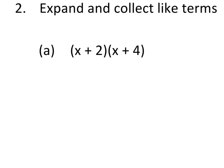Question 2 in the non-calculator asks us to expand and collect like terms. We have double brackets: x plus 2, multiplied by x plus 4. We do that one step at a time — taking the x first and multiplying it by the second bracket, and then the positive 2 multiplied by the second bracket.